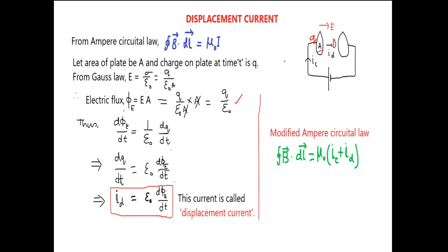So if we differentiate electric flux with time, that is D phi E by DT, we will get 1 by epsilon naught DQ by DT. And we know DQ by DT is a current. So DQ by DT equal to epsilon naught D phi E by DT.